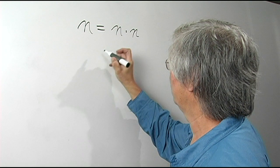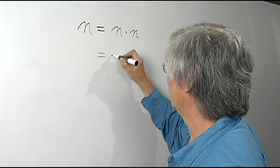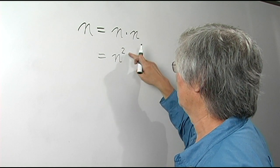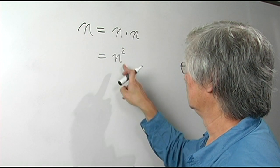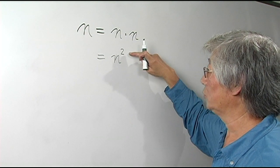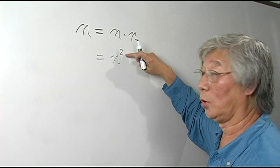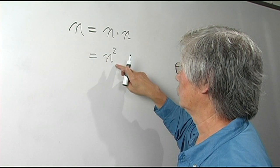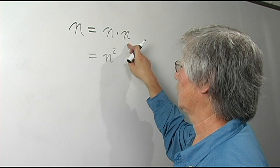Now in shorthand form, we can write n with a superscript 2. Now the number n is called the base and the superscript 2 is called the exponent. So this is called an exponential form of this multiplication.